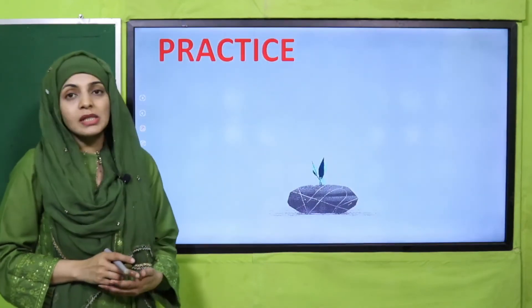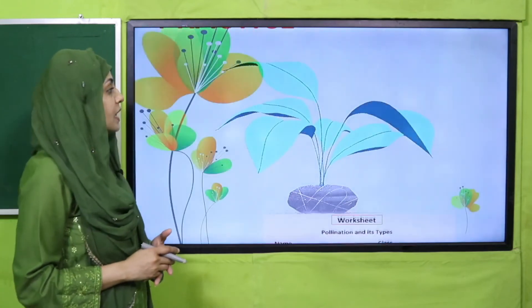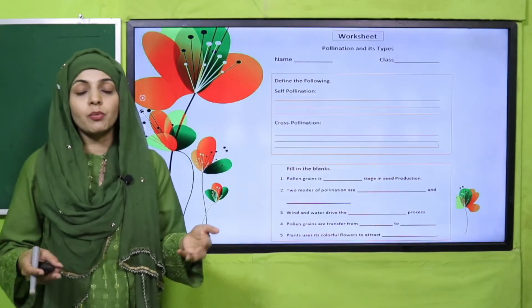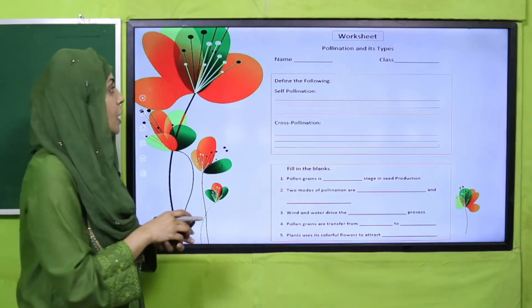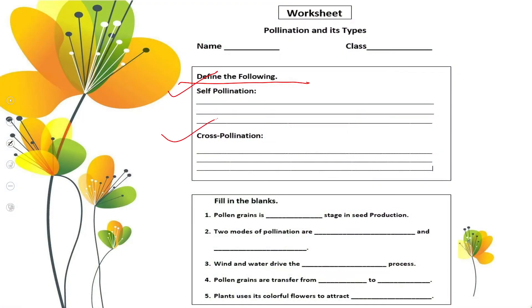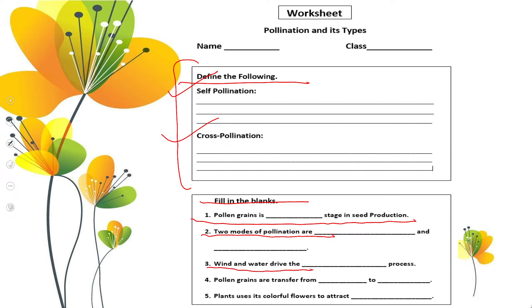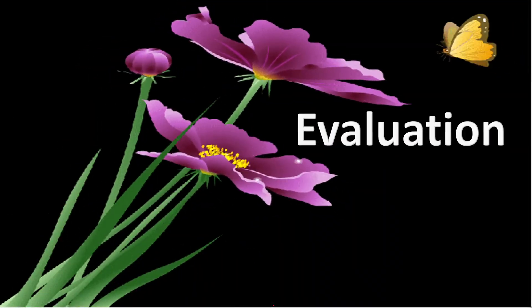Now it is time for practice. Download the worksheet from the description box below this video, or get it in print form from your teacher. Define the following: self-pollination and cross-pollination. Then fill in the blanks: pollen grain is the dash stage in seed production; two modes of pollination are dash and dash; wind and water drive the dash process; pollen grains are transferred from dash to dash; plants use their colorful flowers to attract dash. Complete this worksheet.